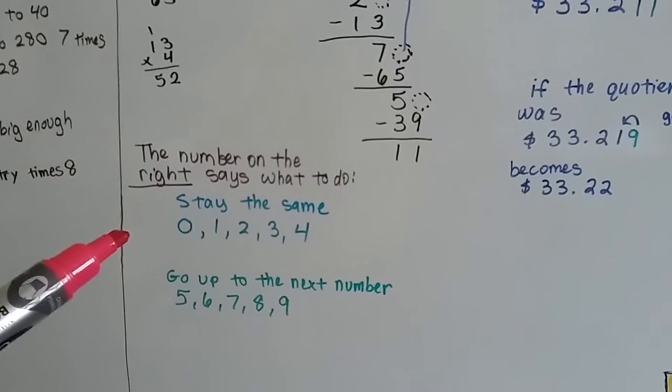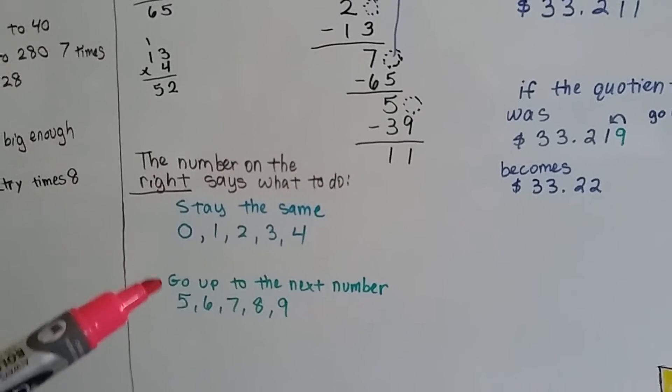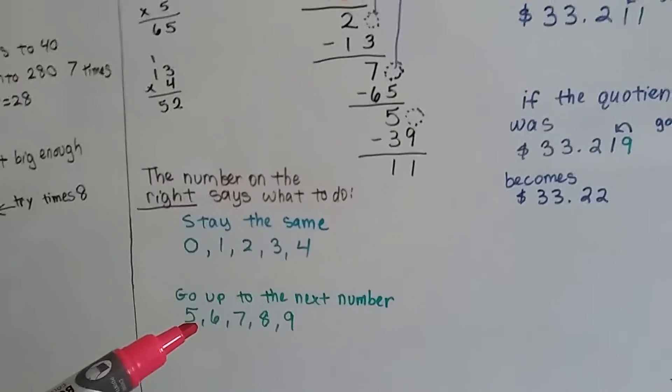The number to the right says what to do. If it's a 0, 1, 2, 3, or 4, it tells it to stay the same. And if it's a 5, 6, 7, 8, or 9, it tells it to go up to the next number.